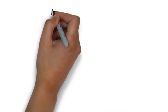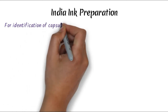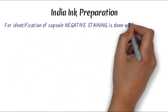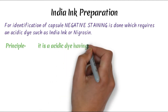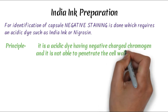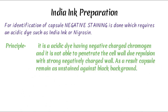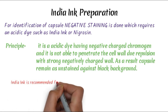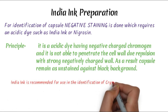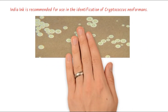India ink preparation is mainly used for staining the capsule, and it is basically a negative staining technique using India ink or nigrosin. The principle is that it is an acidic dye having a negative charge, and it is not able to penetrate the cell wall due to repulsion with the strong negative charge of the fungus. As a result, the capsule remains unstained against a black background. India ink is recommended for identification of Cryptococcus neoformans.